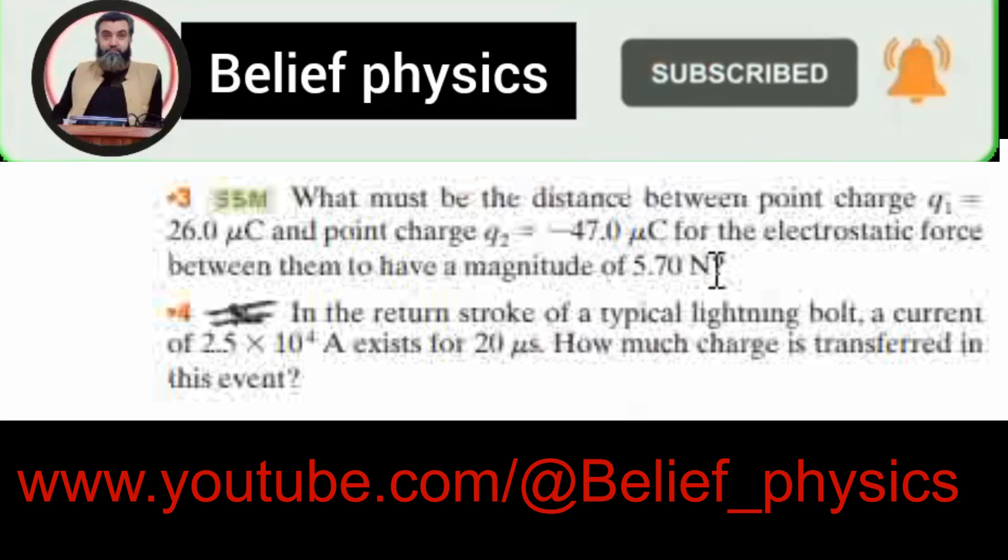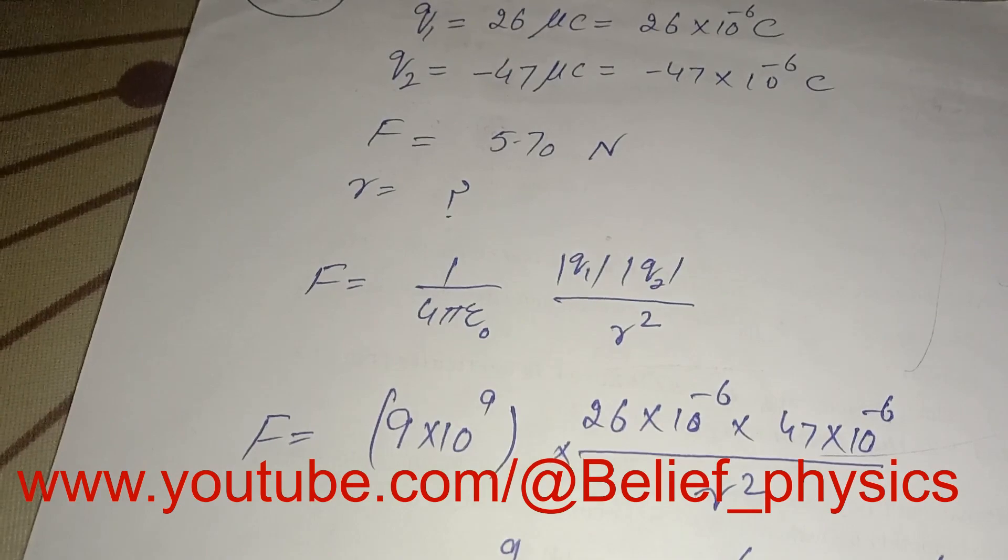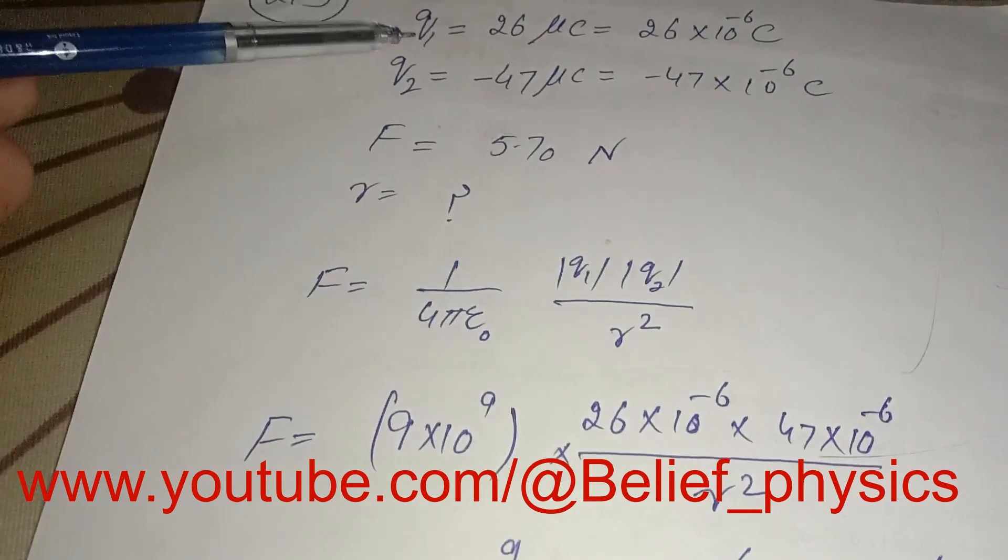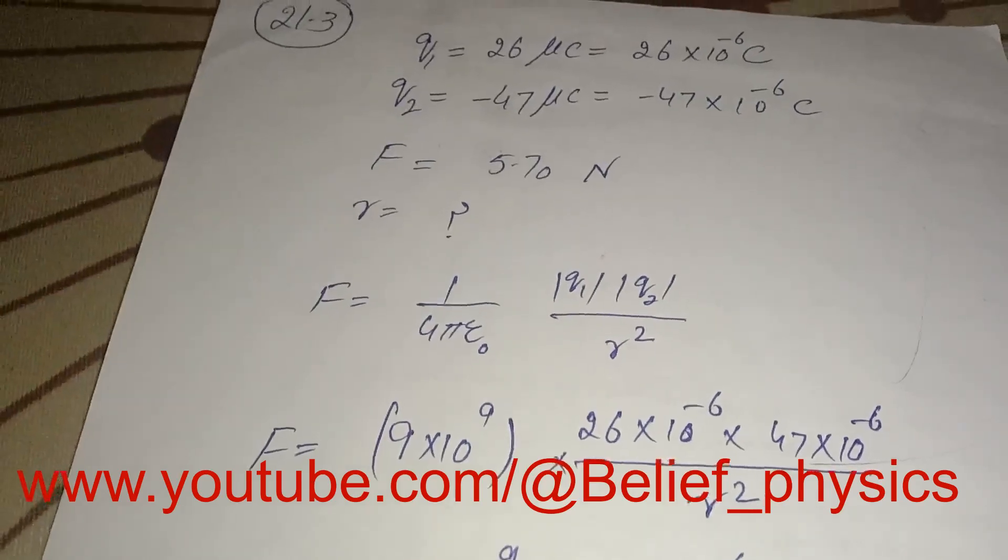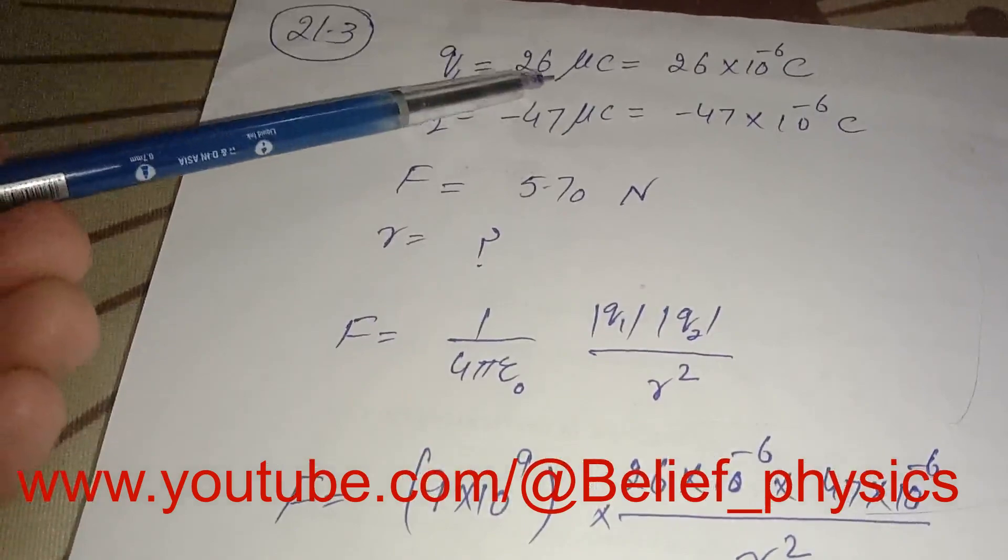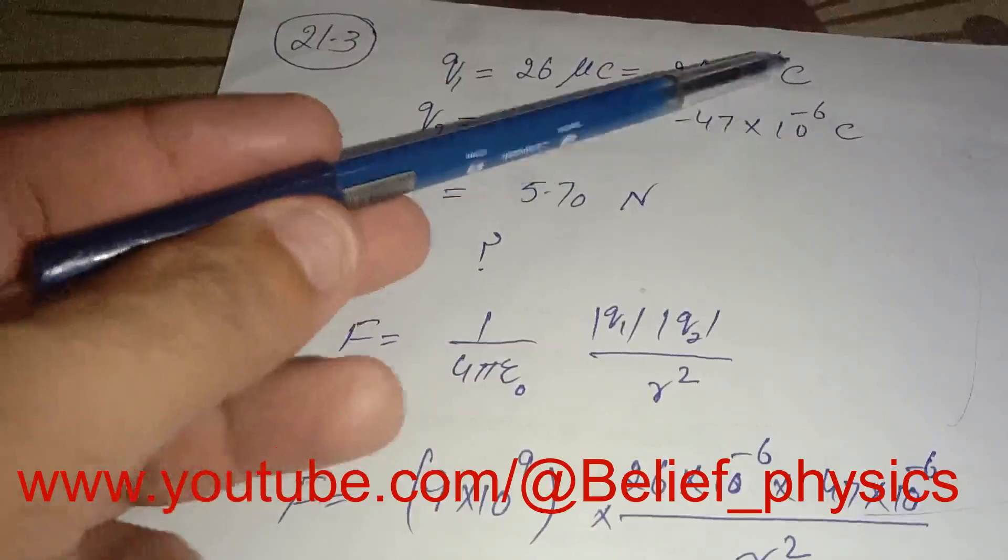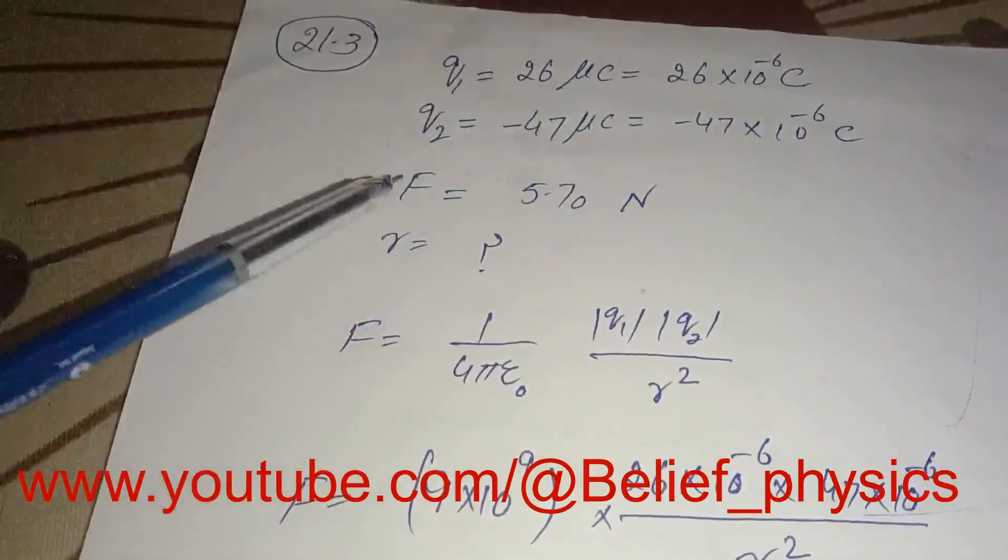What must be the distance between them? We have to find r. In the question, we're given that the first point charge is q1 = 26 microcoulombs. Micro is 10 raised to minus 6, so it will be 26 × 10^-6 coulombs.